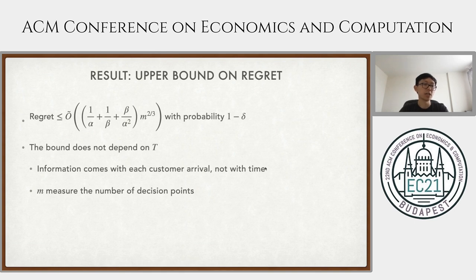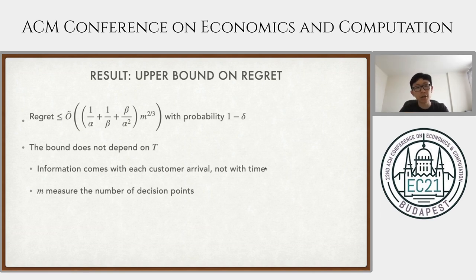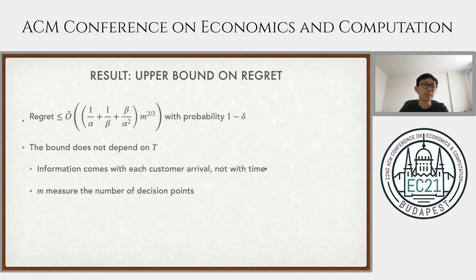Our main result shows that this algorithm achieves M^{2/3} regret with probability at least 1 - delta. One interesting thing to note is that the bound does not depend on T, which is typically what you see in other online learning and dynamic pricing papers. The main reason is that in our setting, information comes with customer arrivals rather than with time. Therefore, M measures the number of decision points, which is the main driver of regret.